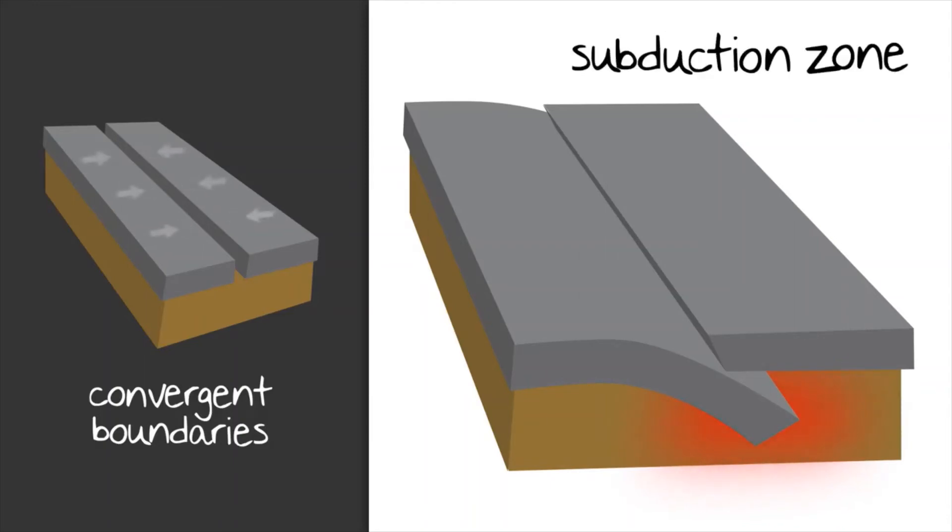And the deeper under the Earth's surface that plate goes, the more pressure it creates. That pressure, coupled with high heat, causes the crust to melt forming magma. The magma presses up towards the surface, and voila, you've got a volcano.